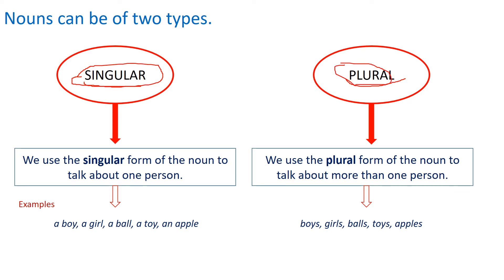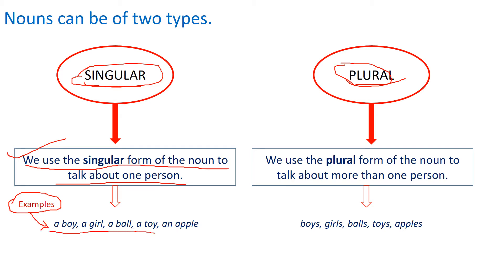First, let's look at the definition of singular nouns. A singular noun uses the singular form of the noun to talk about one person or thing. Whenever we are talking about any one person or thing, it is called a singular noun. For example: a boy, a girl, a ball, a toy, an apple. These are all examples of a singular noun.